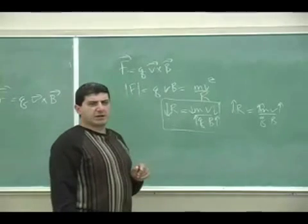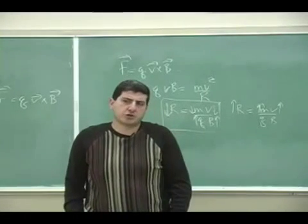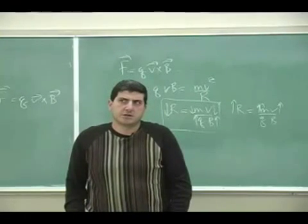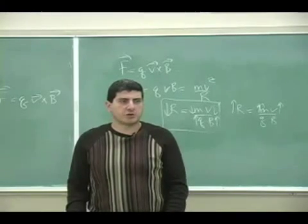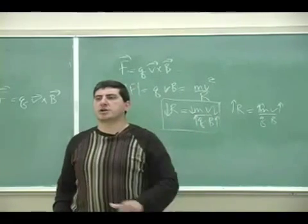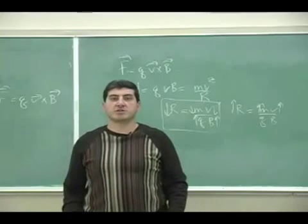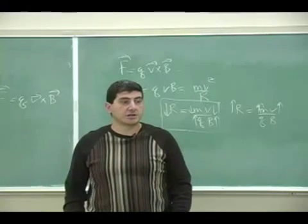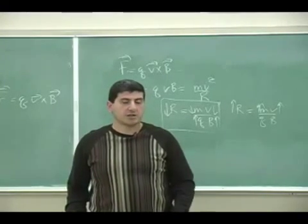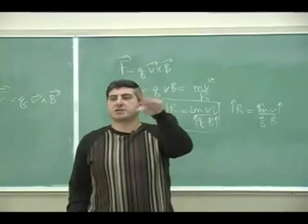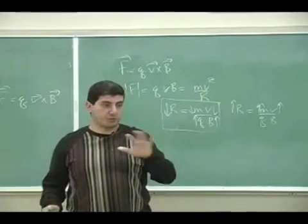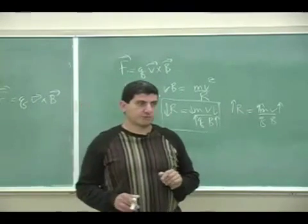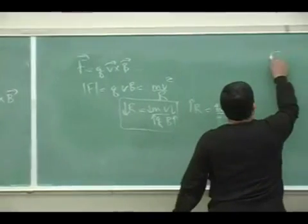Let's now — just for the sake of interest — calculate using the magnetic field of the Earth. I want to calculate if a proton or electron enters our Earth's magnetic field, what is the radius of its orbit? Let's say it enters perpendicular to the magnetic field of the Earth.